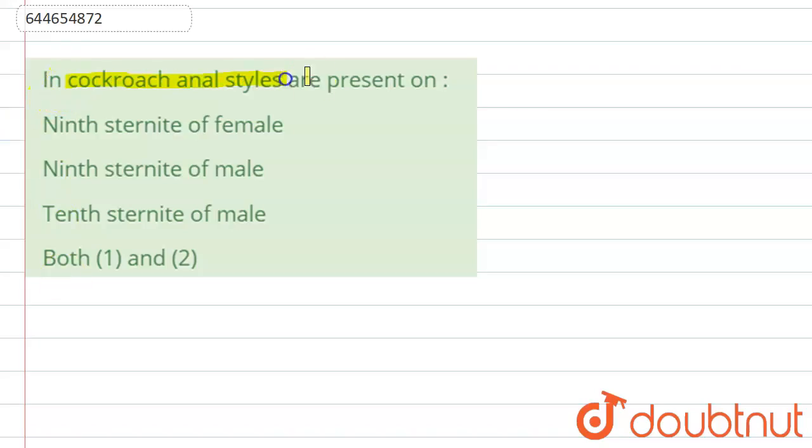the anal styles are present on: Option A - ninth sternite of the female, Option B - ninth sternite of the male, Option C - tenth sternite of the male, and Option D - both 1 and 2.